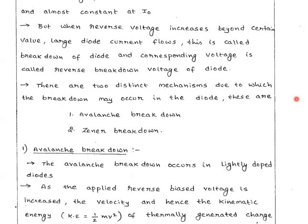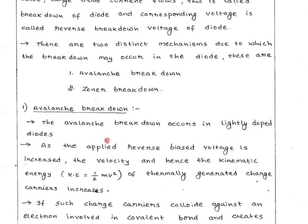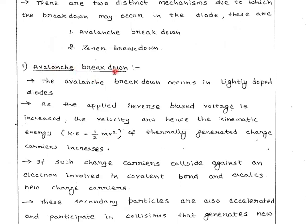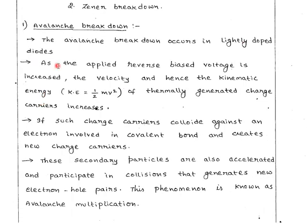There are two distinct mechanisms due to which breakdown may occur in the diode. They are avalanche breakdown and Zener breakdown. Avalanche breakdown occurs in lightly doped diodes.